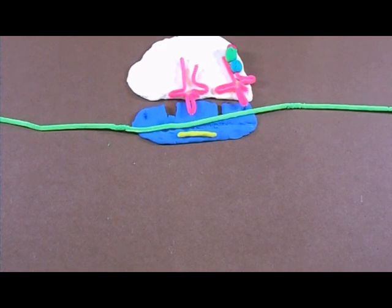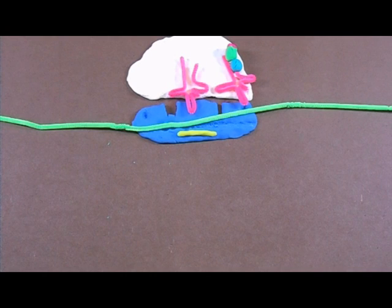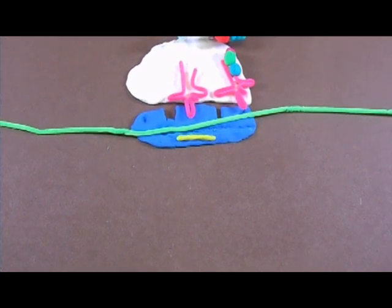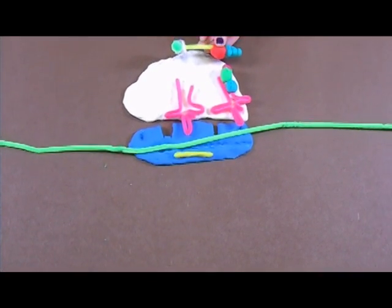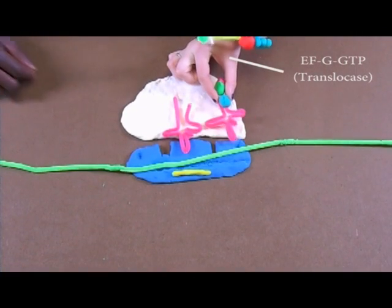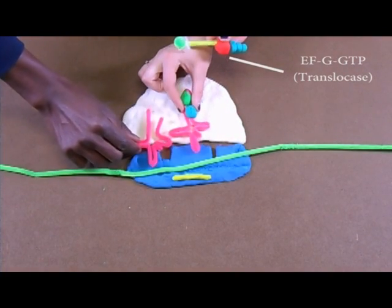Elongation factor G, which is also bound to GTP, also known as translocase, moves the tRNA from the A-site to the P-site, which will in turn push the tRNA that was originally in the P-site into the E-site.